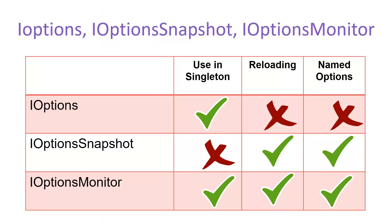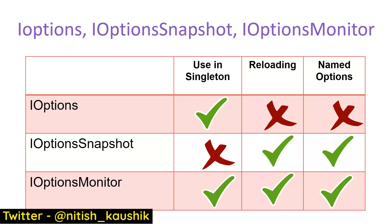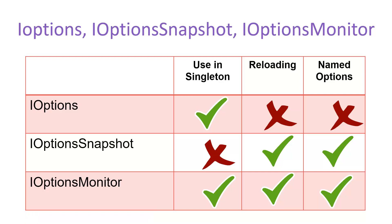Here I have created a table. In the top bar I have written the use in singleton, then reloading — is reloading applicable — and the named options. And here I have written all three interfaces.